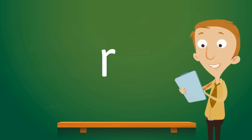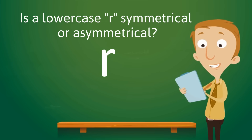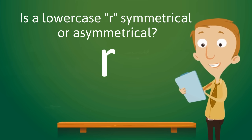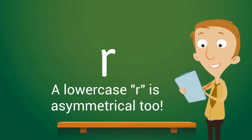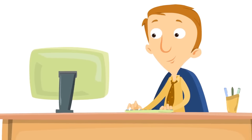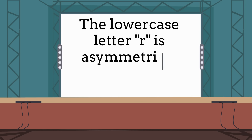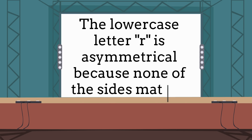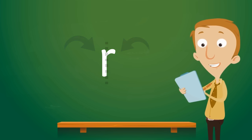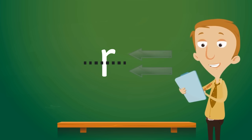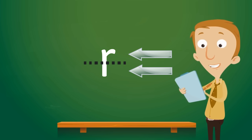How about a lowercase R? Can you tell just by looking at it — is a lowercase R symmetrical or asymmetrical? A lowercase R is asymmetrical too. When you're looking for symmetry, you are looking to see if the sides will match. The lowercase letter R is asymmetrical because none of the sides match.